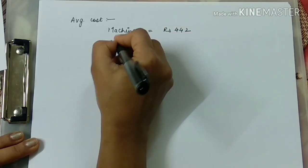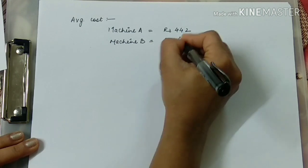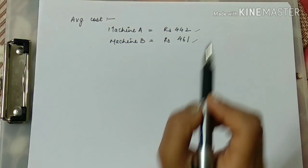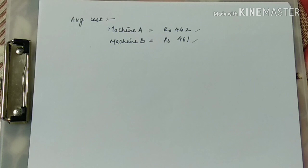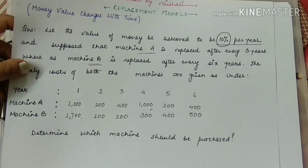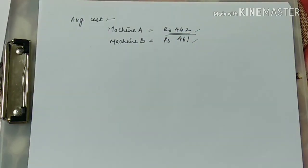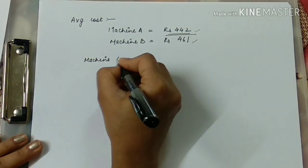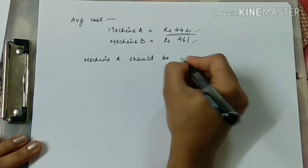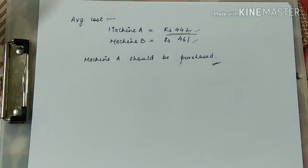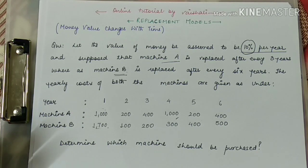Average yearly cost of A for 6 years = 2647 ÷ 6 = 442 rupees. Now comparing: machine A average cost = 442 rupees, machine B average cost = 461 rupees. Since machine A has the lower cost, machine A should be purchased. Please like, subscribe, and share my channel, and post a comment if you have any query in operations research.